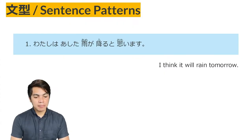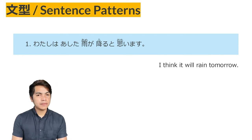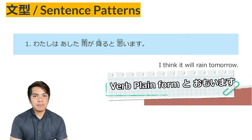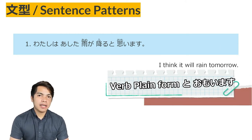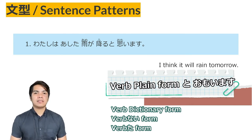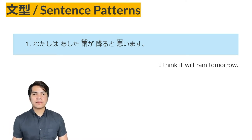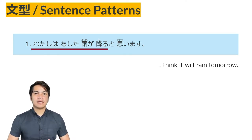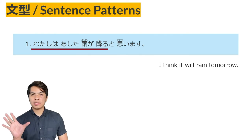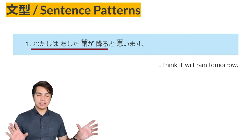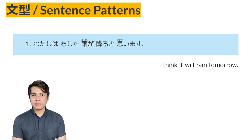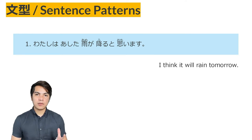Let's read Sentence Pattern No. 1. The pattern used in this sentence is verb plain to omoimasu. So when we say verb plain, these are the verb dictionary form, the verb nai form, and the verb ta form. This sentence pattern is used to express ideas or judgment when expressing conjecture or when stating an opinion. The ideas, judgment, or opinions are indicated and marked with the particle 'to.' So your idea or judgment or opinion, particle to omoimasu. Remember, if you want to express your opinion or idea, we will use the sentence pattern verb plain to omoimasu.